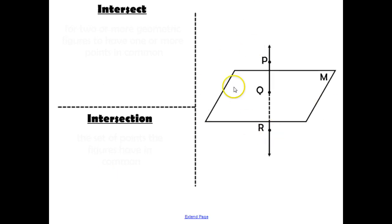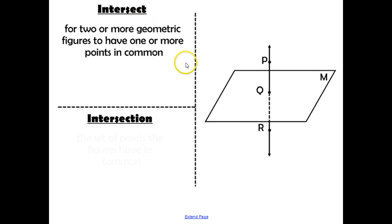So we're going to use this diagram here to discuss these two vocabulary words, intersect and intersection. Now, these are a little different even though they seem similar, and hopefully you remember from all your English classes that to intersect, this is a verb. So we're talking about two or more geometric figures to have one or more points in common. Now, when you're looking at this diagram, look at this line very carefully. There's this portion that is dotted.